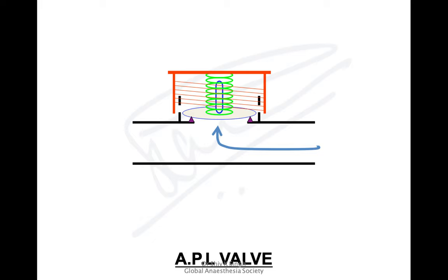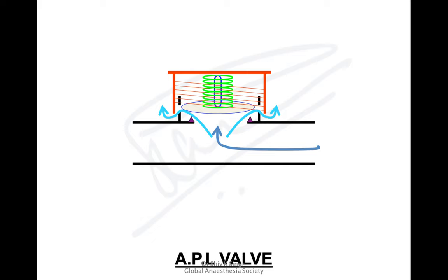As the expired gases come through the patient end — patient end on the right, machine end on the left — machines are continuous flow equipment, so there's continuous flow and the circuit has its own resistance. This will act against the disc and lift it up, and the gases are vented out. This is how the APL valve works, and this is the basic structure of the APL valve.